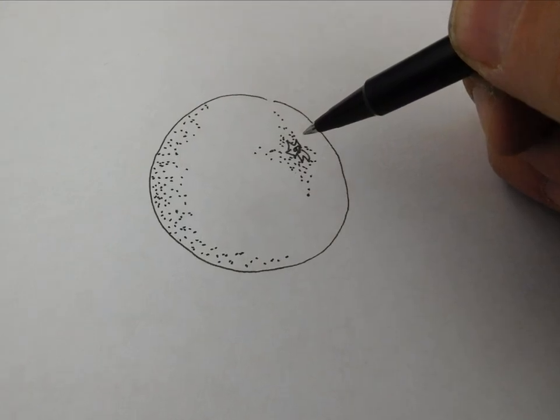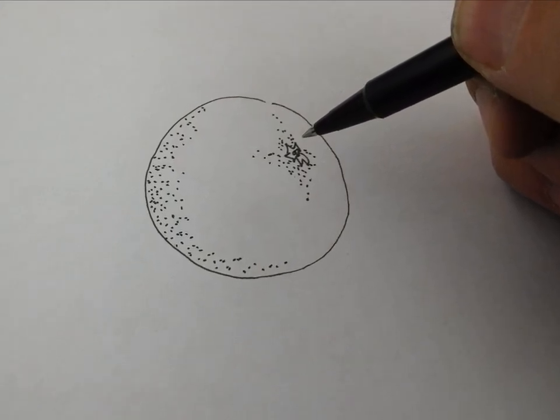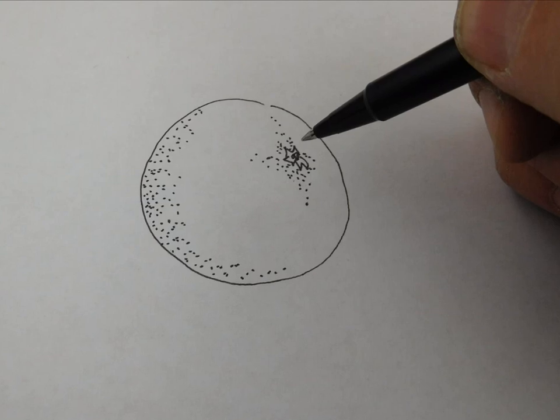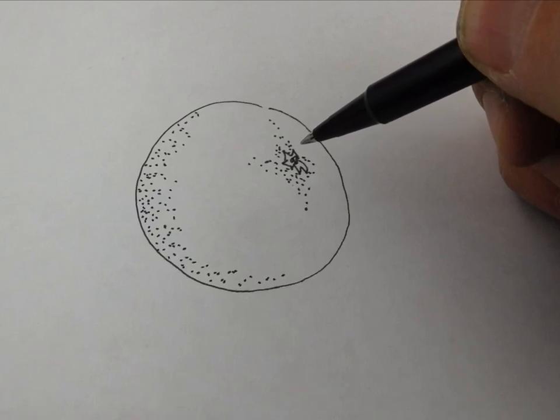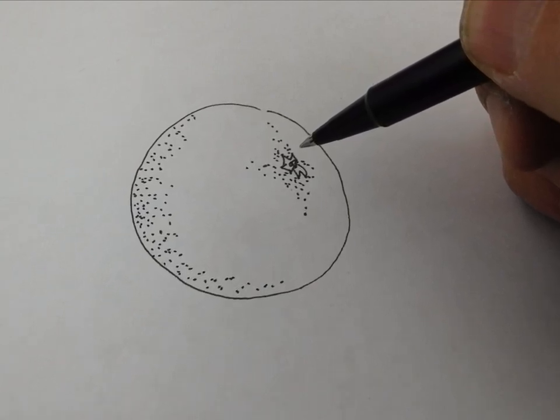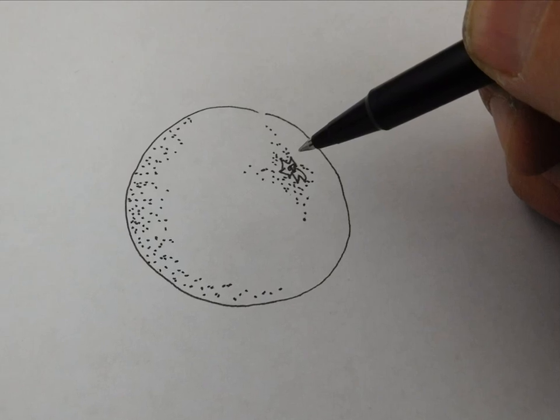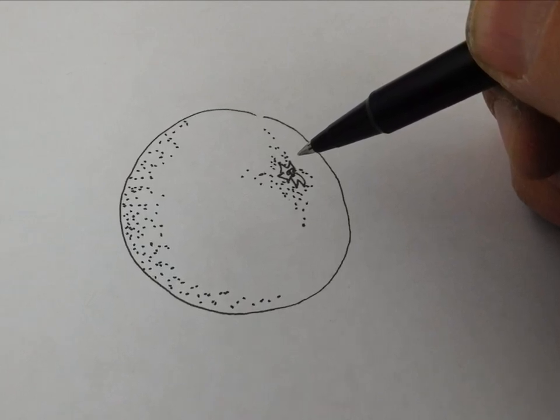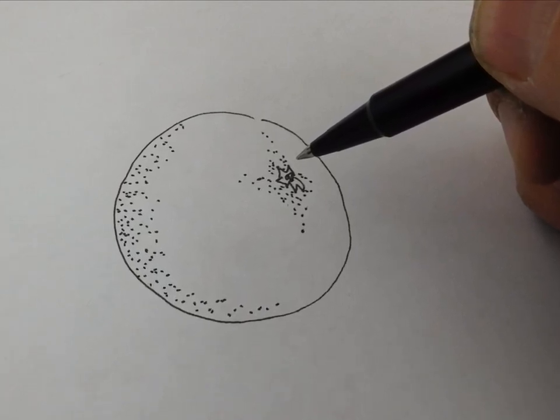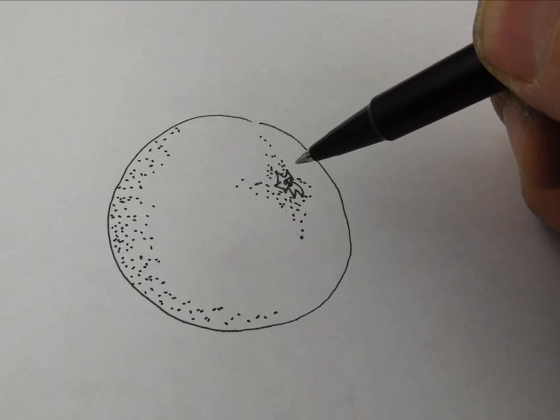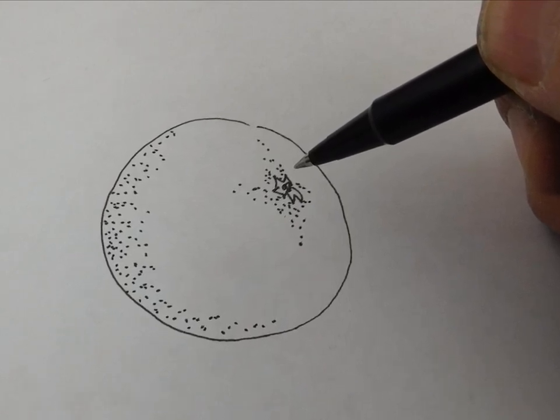So I go ahead and I add more and more dots. And I can even shape objects. In this case, I'm kind of making the part of the fruit where the blossom was. And I've shaded the left side to make it appear round by adding more dots that get dense as they approach the edge of the piece of fruit.